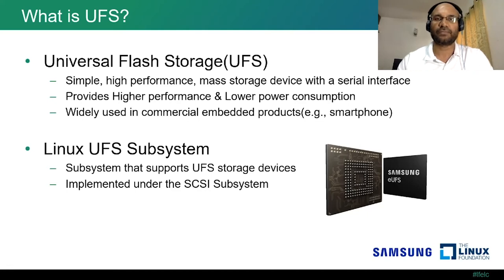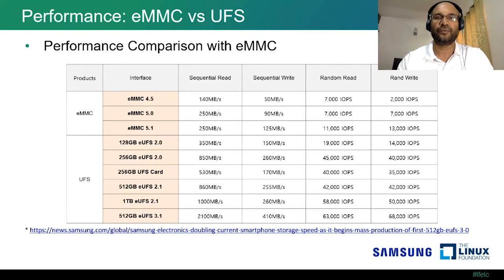Inside Linux, UFS is implemented under the SCSI subsystem. Let's see where UFS stands in terms of read and write comparison with eMMC. With eMMC 5.1, sequential read is around 250 megabytes per second and write is around 125 megabytes per second. In the case of UFS, the read is around 2100 megabytes per second and sequential write is around 410 megabytes per second. We can clearly see there is an 8.5x jump in read performance and a 3.5x jump in write performance. No wonder why these days all premium smartphones are coming with UFS as internal storage.